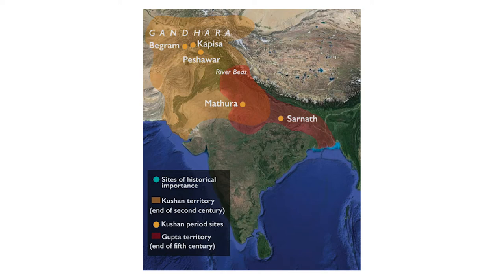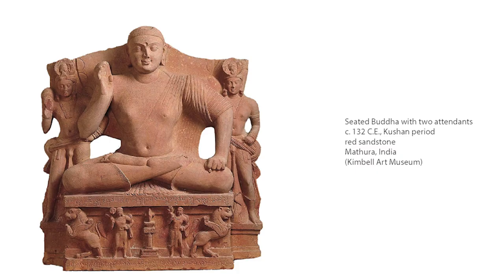Around the first century CE, anthropomorphic depictions of the Buddha began to emerge from three areas, each with its own distinct style that would later influence styles in China. In the far north, you have Gandhara, which is in present-day northern Pakistan and Afghanistan. Then you have Mathura and you have Sarnath, both of them in India. The Mathuran style is generally characterized by colossal sculptures made of red sandstone and the combined influence of Hindu, Jain, and Buddhist iconography.